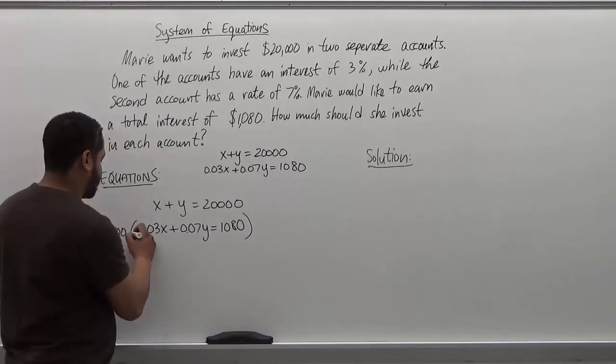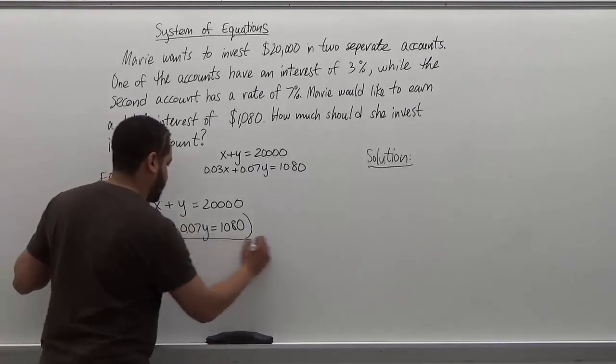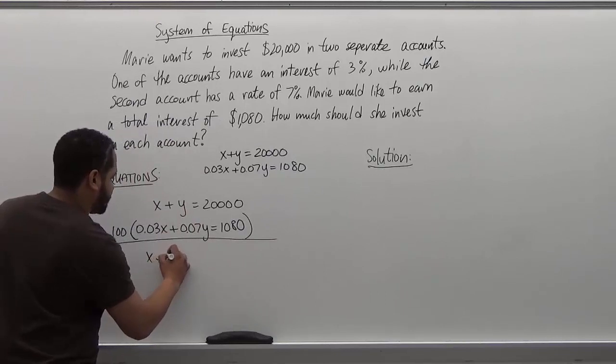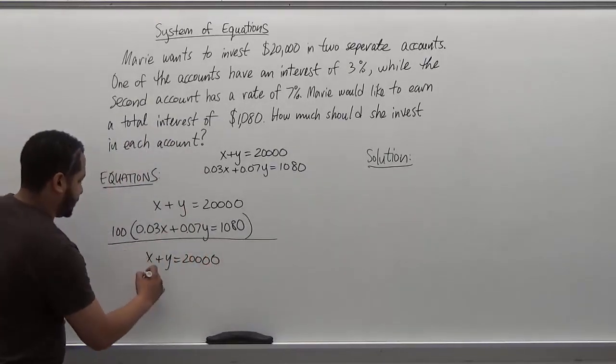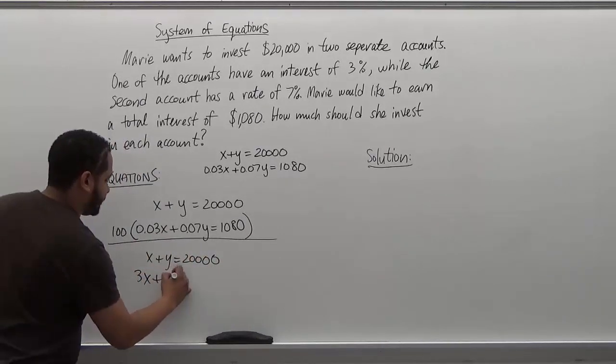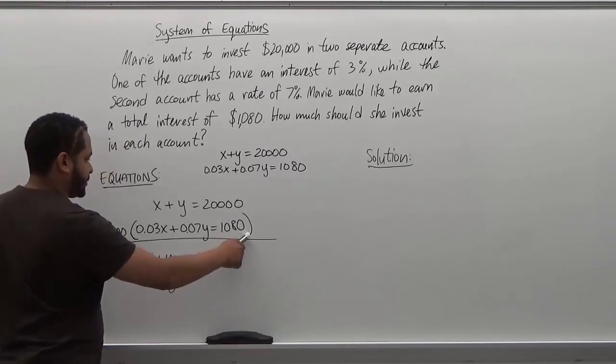We're going to leave the top the same just so that we can get rid of these decimals first. So the top stays the same, x plus y equals $20,000. At the bottom, we get 3x plus 7y, and we add two zeros to this number.